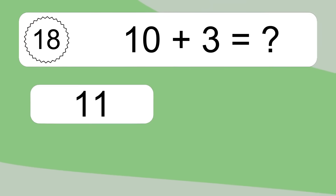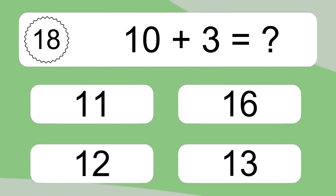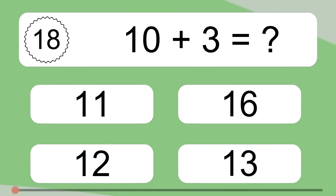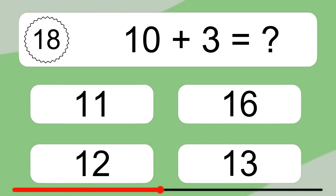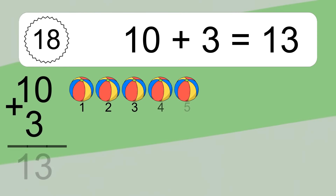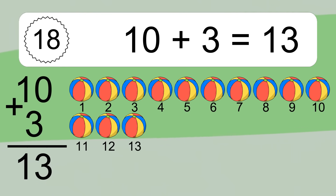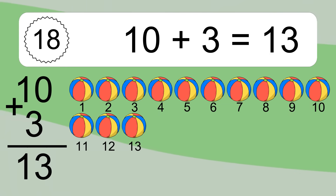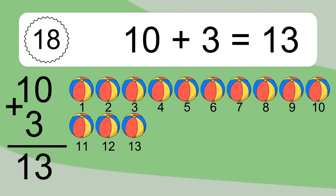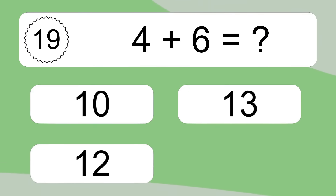10 plus 3 equals what? 10 plus 3 equals 13. Let's count it: 1, 2, 3, 4, 5, 6, 7, 8, 9, 10, 11, 12, 13.